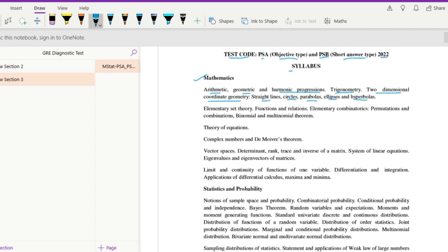Then you have elementary set theory, functions and relations, then elementary combinatorics, permutations and combinations, then binomial and multinomial theorem. Then we have theory of equations, complex numbers and de Moivre's theorem.